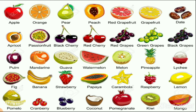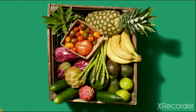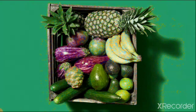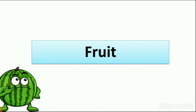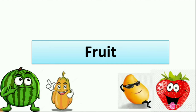Here are fruits which we get from plants. Here are vegetables like carrot, pumpkin, tomatoes — we also get vegetables from plants. Yesterday we saw a picture of fruits and vegetables in a basket. We get fruits from plants like watermelon, papaya, mango, and strawberry.